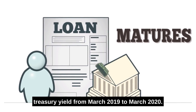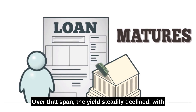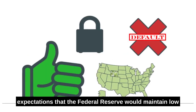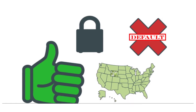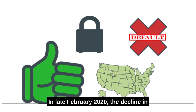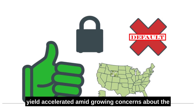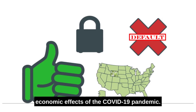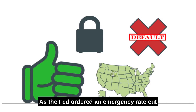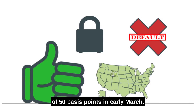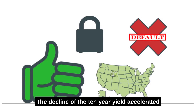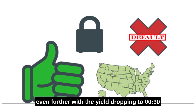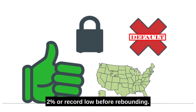Below is a chart of the 10-year Treasury yield from March 2019 to March 2020. Over that span, the yield steadily declined with expectations that the Federal Reserve would maintain low interest rates or cut them further. In late February 2020, the decline in yield accelerated amid growing concerns about the economic effects of the COVID-19 pandemic. As the Fed ordered an emergency rate cut of 50 basis points in early March, the decline of the 10-year yield accelerated even further, with the yield dropping to 0.32%, a record low, before rebounding.